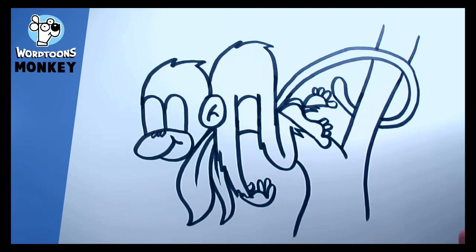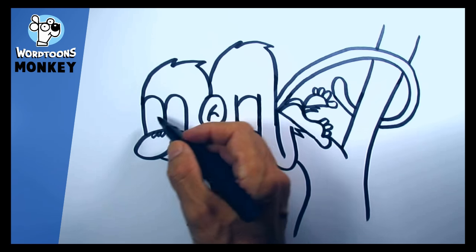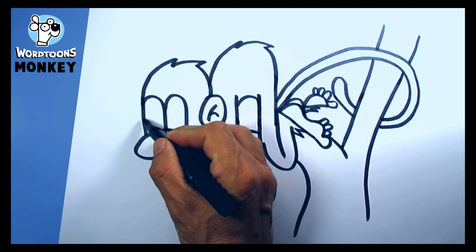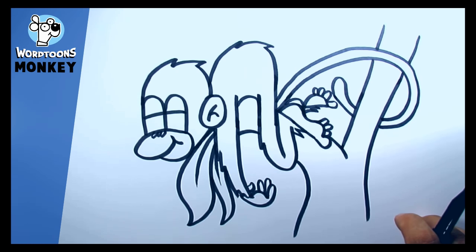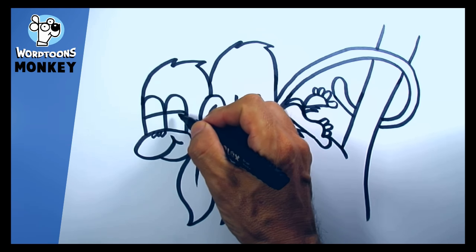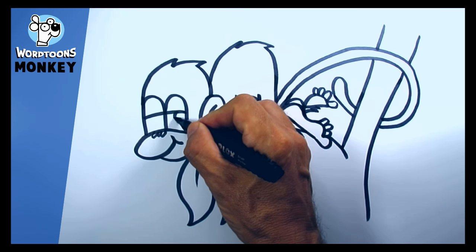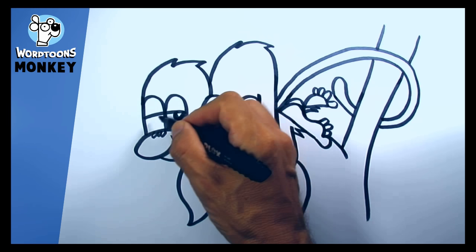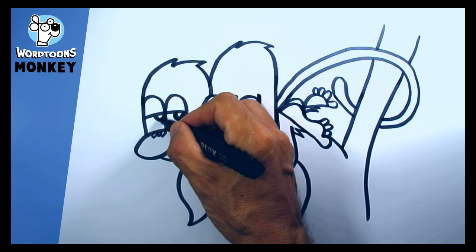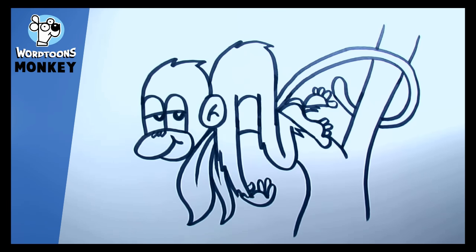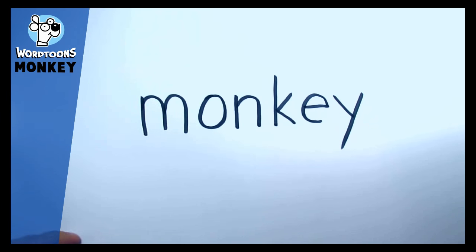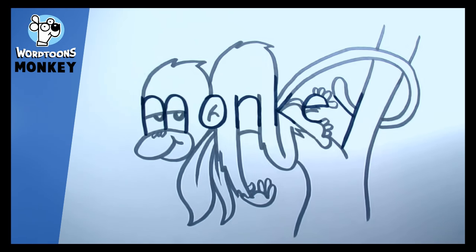Okay, so what have we got left? Well, his eyes. It looks like he's pretty relaxed and chilling out, so let's make him, you know, his eyelids there, give him a bit more of a dopey, relaxed, chilled out expression. There we go, and there we go, it's the word monkey turned into a cartoon of a monkey.